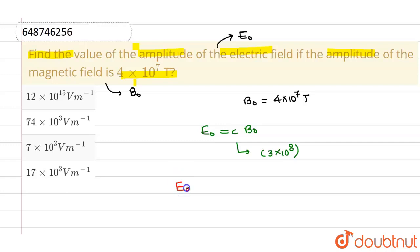So if I substitute the respective values in this equation, then I will be having E₀ = 3×10⁸ × B₀, which is given as 4×10⁷. Now if you multiply these two, then you will be having E₀ = 12×10¹⁵ volt per meter.